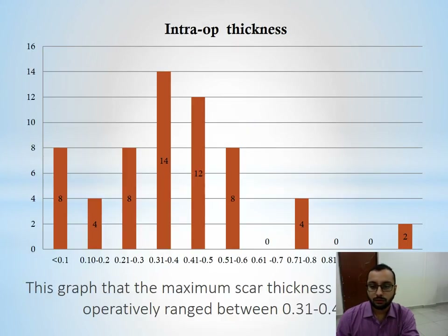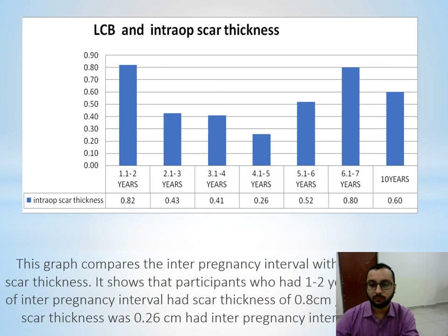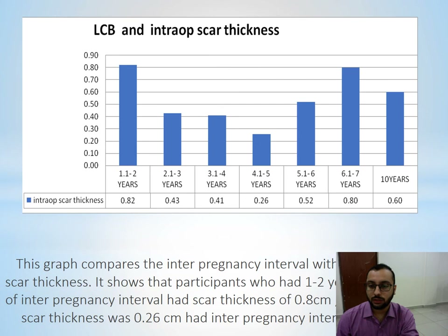This graph shows that the maximum scar thickness noted intraoperatively ranged between 0.31 to 0.4 cm. This graph compares the scar thickness measured sonographically and intraoperatively. This graph compares the interpregnancy interval with intraoperative scar thickness. It shows that participants who had 1 to 2 years and 6 to 7 years of interpregnancy interval had scar thickness of 0.8 cm, while the lowest scar thickness of 0.26 cm had an interpregnancy interval of 4 to 5 years.